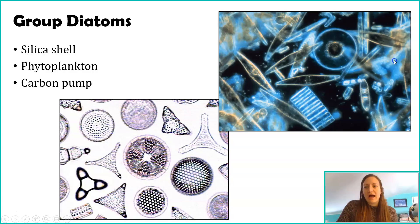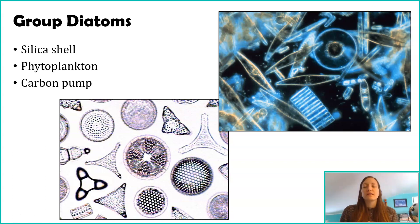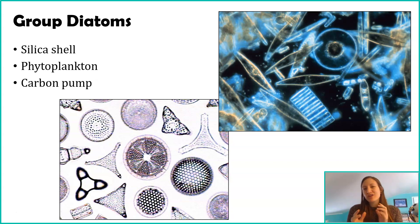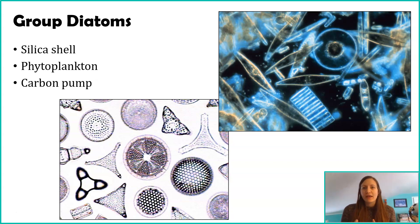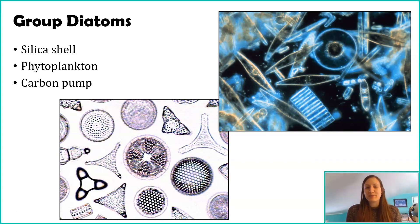The first algae protist group we'll talk about is diatoms. Diatoms are literally beautiful. The reason they're beautiful is they have a shell around them that is silica-based. Silica is what we use to make glass, and they give off this glass-like appearance, as you can see in these pictures.